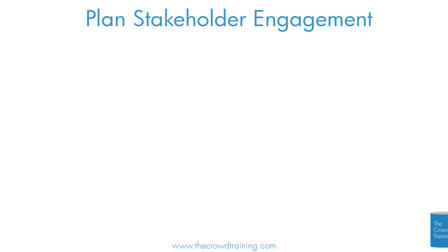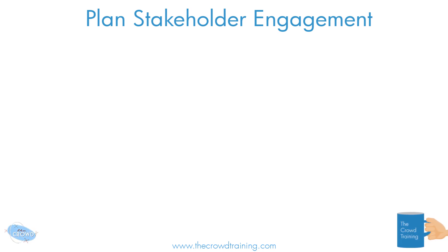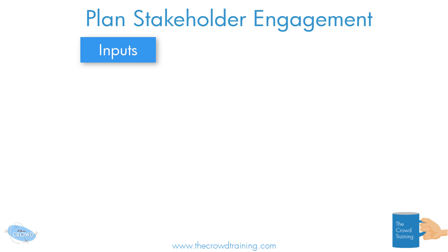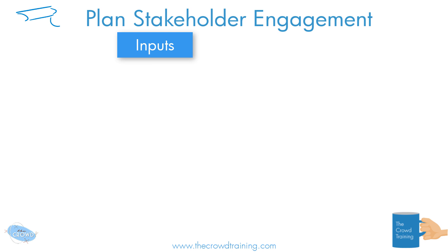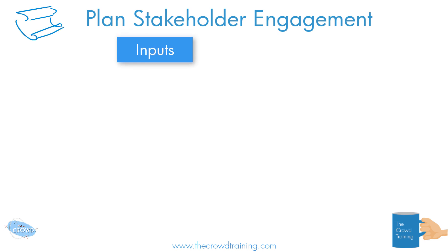Let's draw out the Plan Stakeholder Engagement process in the 6th edition PMBOK from the Crowd Training as part of PM City. Starting with the inputs, we can start with the project charter because at the very start of the project it's indicating to us what is the point, who are the people involved — the stakeholders, how engaged they're going to be, what are their objectives, what do they care about.